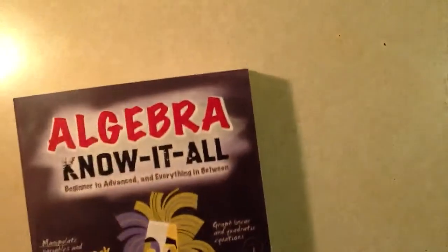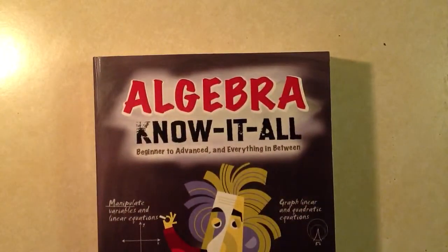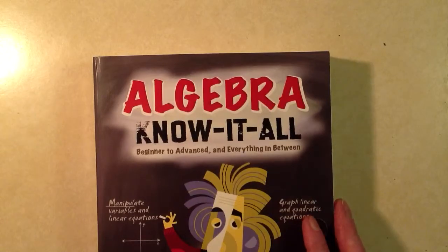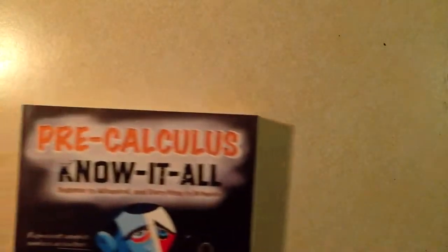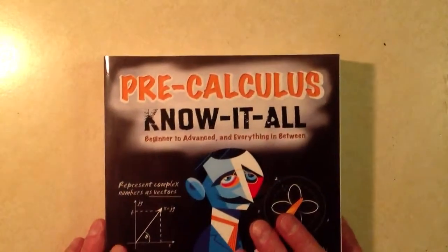A little bit over 700 pages in Algebra Know-It-All. Once I finished that one, actually the second book to come out was Calculus, but the second book in the series is called Precalculus Know-It-All.